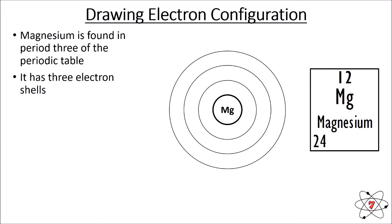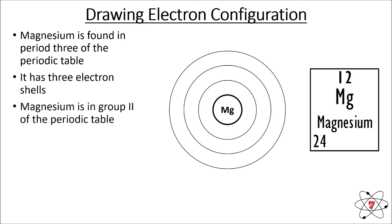You can work out that there are three electron shells by remembering that the first electron shell contains two electrons, the second shell a maximum of eight — that gives us ten — and there are twelve in total, so there must be a third shell. We also know that magnesium is in group two of the periodic table, which means there must be two electrons in the outer shell. I've put those at opposite ends of that shell, so we've completed the outer shell first.